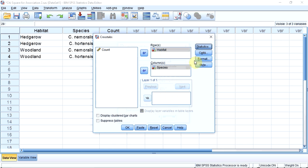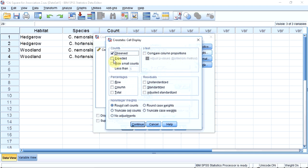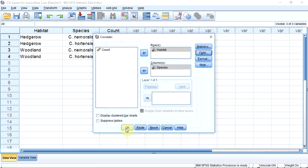I am now going to go up to the Cells button, where it allows me to tick the expected box, which will give me the expected values it has calculated in the output. Down to Continue and press OK.